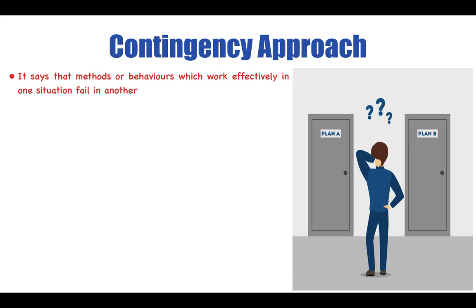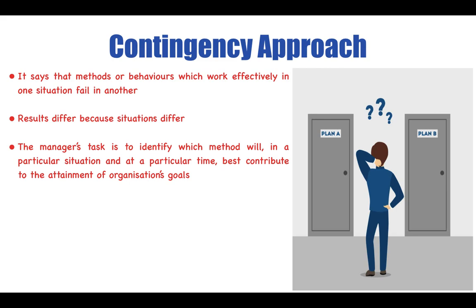Next is the contingency approach. Contingency means choosing a particular method according to the situation. It says that methods which work effectively in one situation may fail in another. There are different research findings in organizational behavior — one method might work in your organization, another might not. The manager's task is to identify which method, in a particular situation and at a particular time, will best contribute to the attainment of the organization's goals.